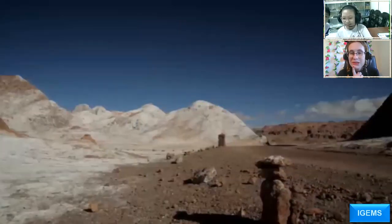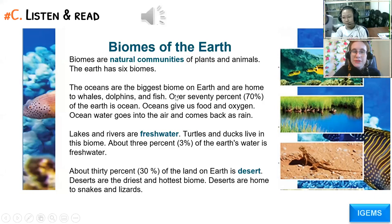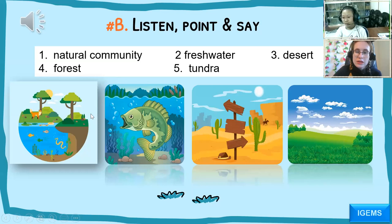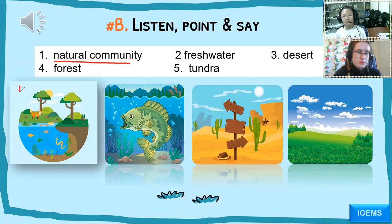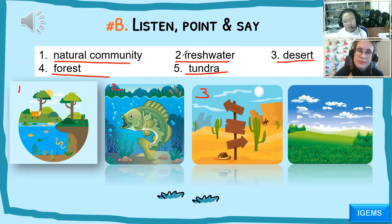Which one is the hottest biome? I think desert. Yes, definitely — I 100% agree! And which is the coldest? The tundra. Let's read the vocabulary: natural community, freshwater, desert, forest, tundra. Which one is this? Grassland. Good job!